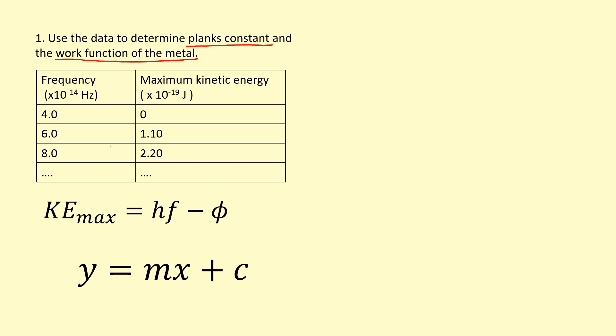And just by comparing these equations here and looking at what set of data I have, it would make sense to plot the maximum kinetic energy on the y-axis. And on the x-axis, I can plot the frequency that I used. Okay, so the thing that's multiplying the x-axis, or in this case the frequency, is going to be the gradient here. So in this case, it's going to be Planck's constant is going to equal the gradient.